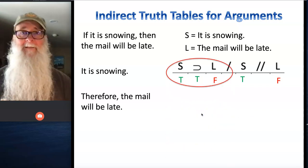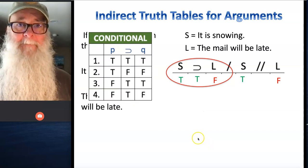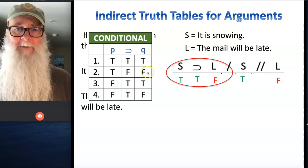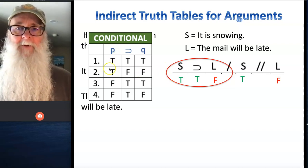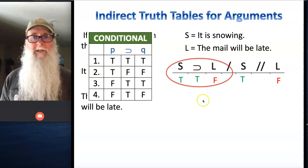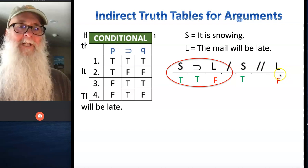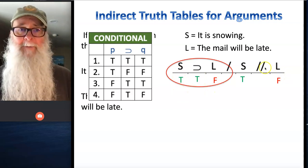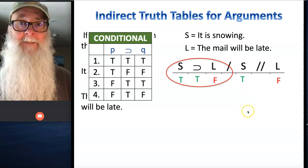And look what just happened. We just ran into a contradiction. Because as line two of our conditional truth table says, anytime the left-hand side of a horseshoe is true and the right-hand side is false, the horseshoe is false. But we assumed the horseshoe to be true. So it's not possible to deduce all of the logically necessary truth values of the component parts of this argument without running into a contradiction.